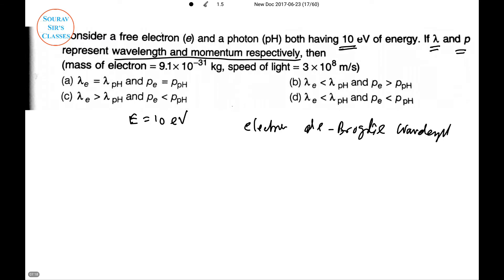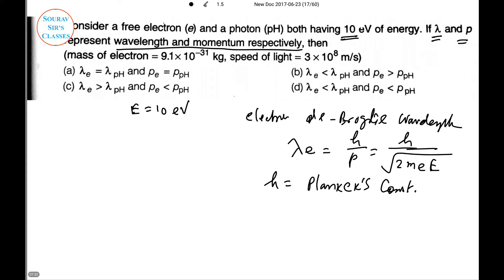Given energy of electron and photon is E = 10 eV. For the electron, the de Broglie wavelength is λe = h/p = h/(2√(meE)), where me is the mass of electron and h is Planck's constant.